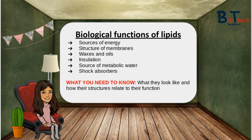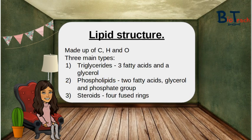Apart from these main functions, you also need to know what lipids look like and how their structure relates to their function. Lipids are made up of carbons, hydrogens and oxygens. There are three main types you will need to learn about for the exam. They are triglycerides, which are composed of three fatty acids and a glycerol group; phospholipids, which have two fatty acids, a glycerol and a phosphate group; and steroids, which are made up of four fused rings.